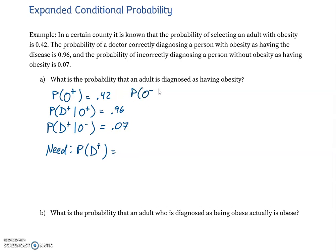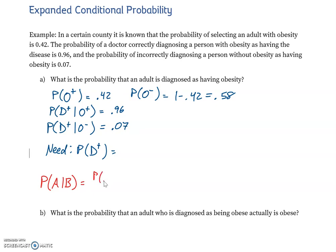That means the remaining 1 − 0.42 = 0.58, or 58%, of people in this county are not obese. This brings back the idea of conditional probabilities: P(A|B) = P(A and B) / P(B).